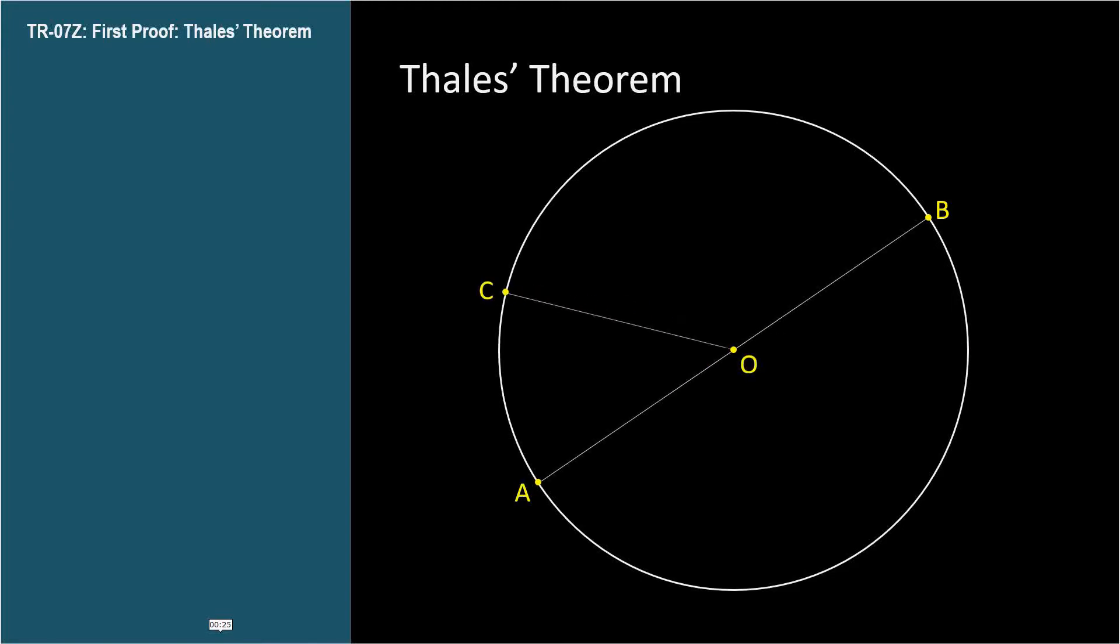We start by drawing a line segment between point C and the center of the circle, which we'll call point O. So we have three line segments, OA, OB, and OC, all congruent to each other because they're all the radius of the circle.